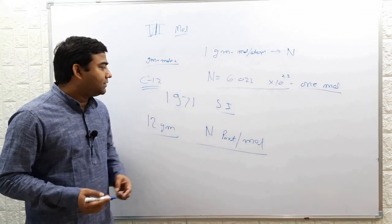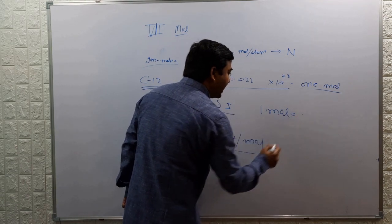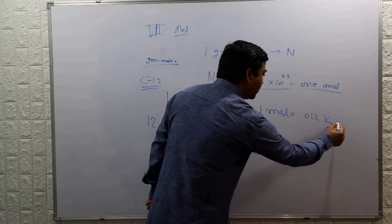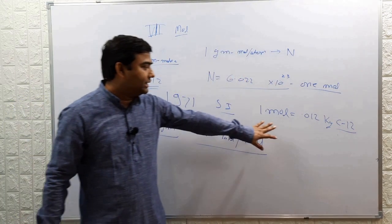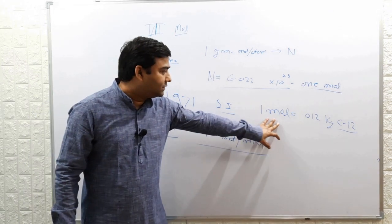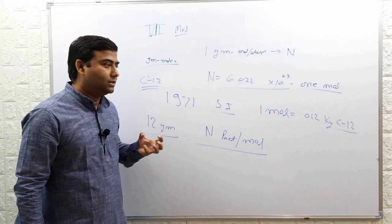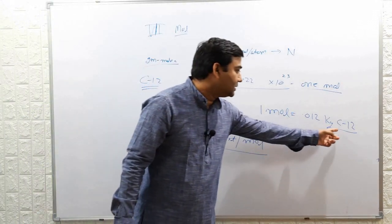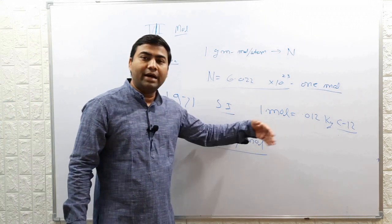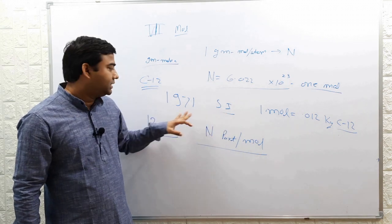As per the definition adopted in 1971, one mole was defined as the number of atoms contained in 0.012 kilograms of carbon-12. So one mole was defined, as per the International System of Units in 1971, as the number of atoms in 12 grams of carbon-12 material — that is, the number of C-12 atoms in 0.012 kilogram, which is equal to its gram atomic weight. That was the definition adopted by SI, by CGPM, as per the SI system in 1971.